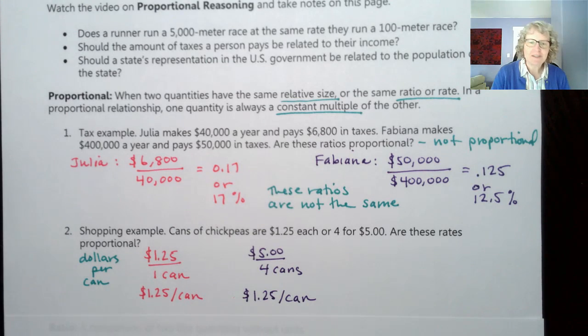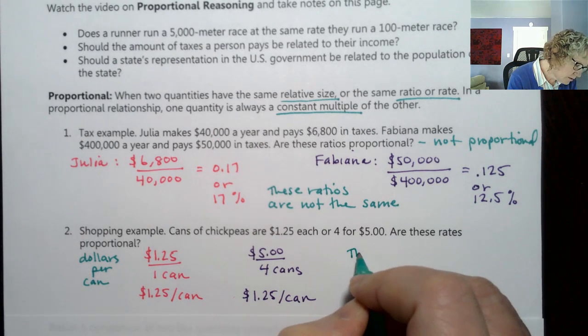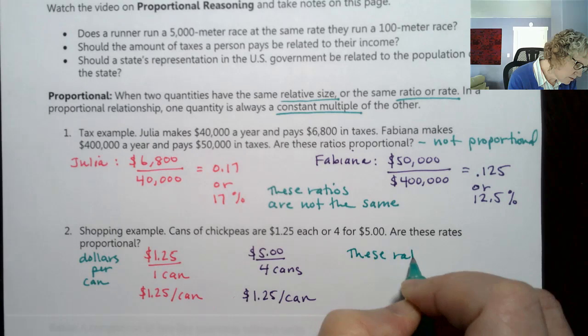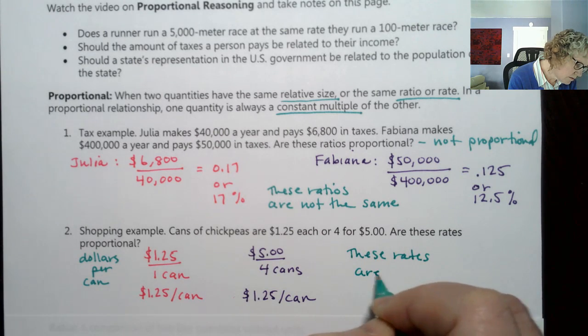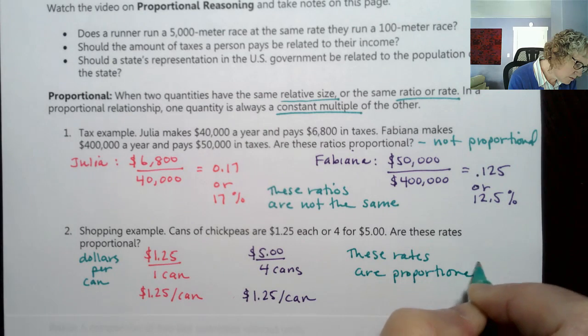So maybe you knew that in your head. Maybe you could see that, knew that in your head, that they were going to come out the same. So these rates are proportional because they're the same, exact same amount.